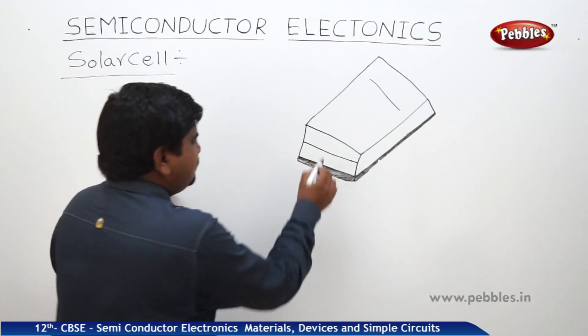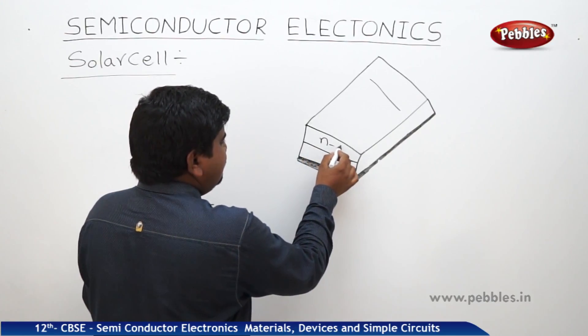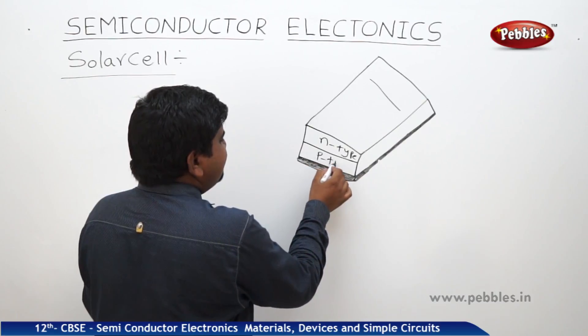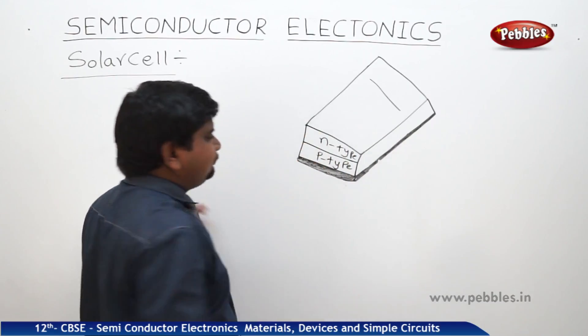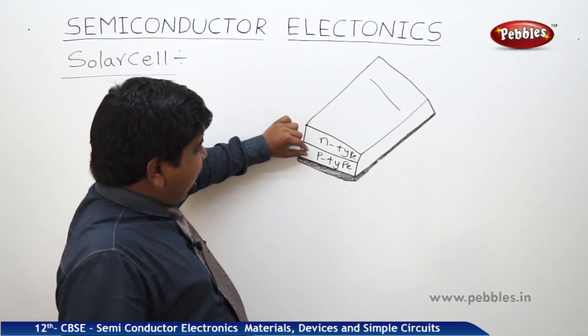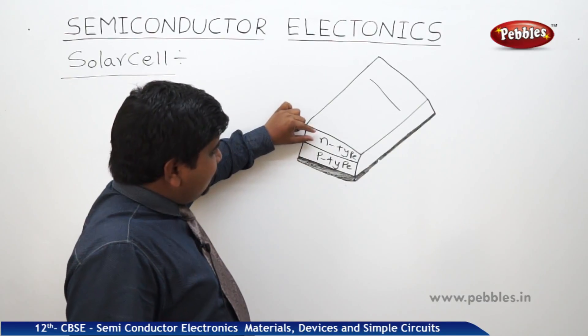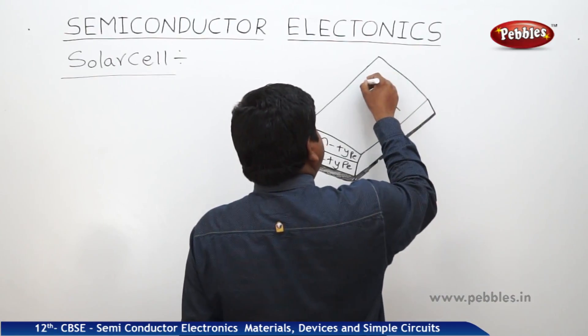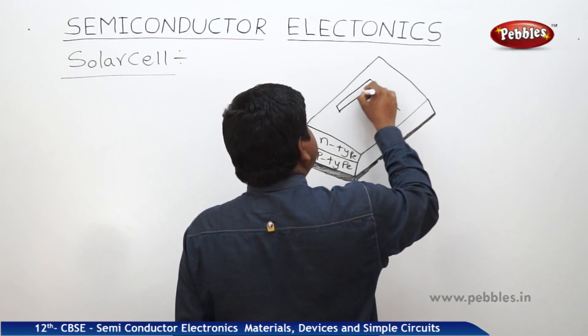This is an n-type semiconductor. This is a p-type semiconductor. So, p-type semiconductor and the coverage is n-type, above the n-type one metal conductor or metallic plate, grid like this.